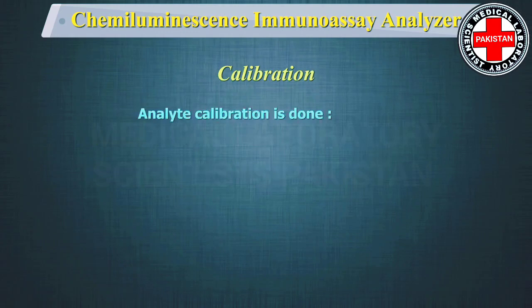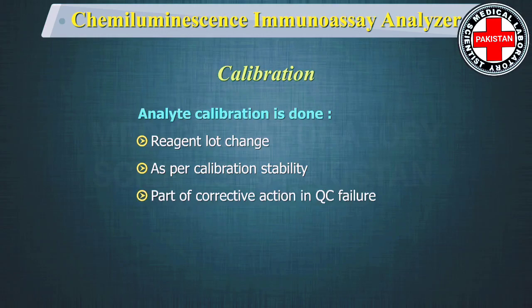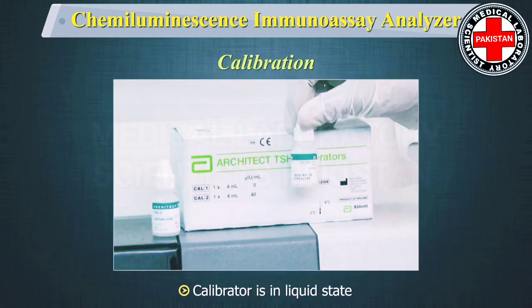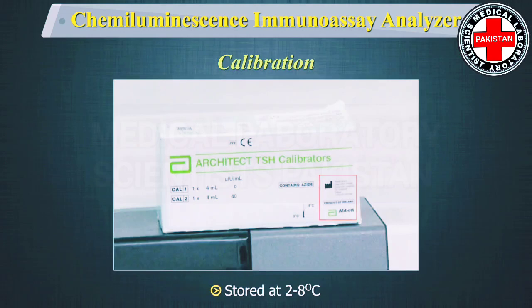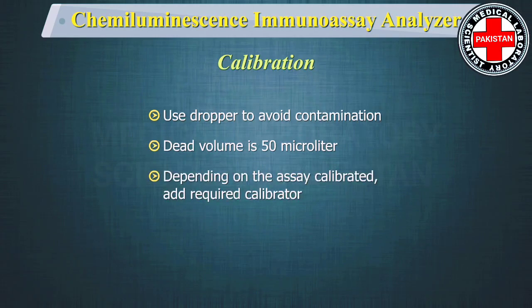Analyte calibration should be done when there is a reagent lot change, as per the calibration stability, or as part of corrective action in quality control failure. In this system, the calibrator is in liquid state, stable until expiry after opening, and stored at 2 to 8 degrees centigrade. Use the dropper provided to avoid contamination. The dead volume is 50 µL; therefore, depending on the assay calibrated, add the calibrator volume required.